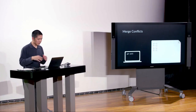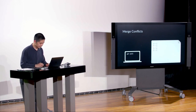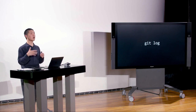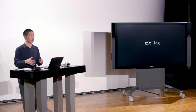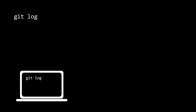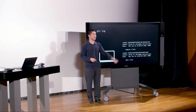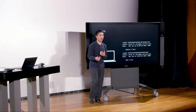Another useful command is git log, which shows you a history of all commits made to your repository. Running git log inside a Git repository shows a list of all different commits, each marked by a unique commit hash — a sequence of numbers and letters — along with who made the commit, when it was made, and the description message you provided, so you can see the full history of what's been going on in your repository.